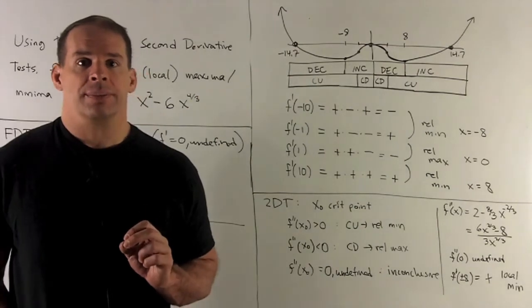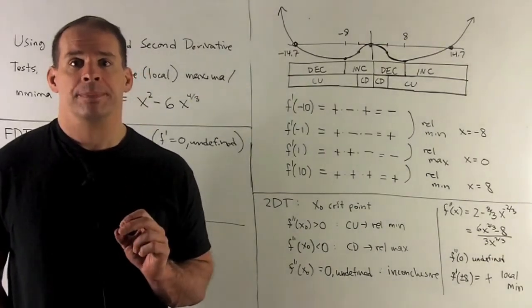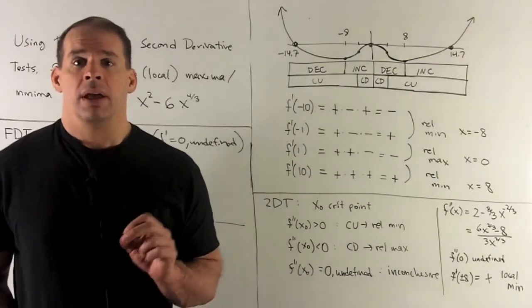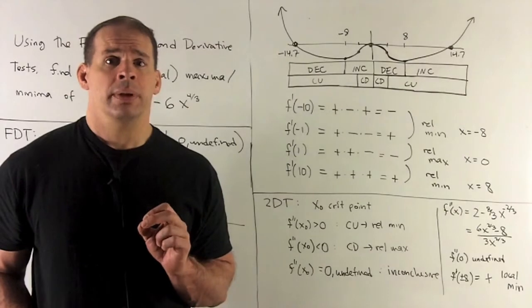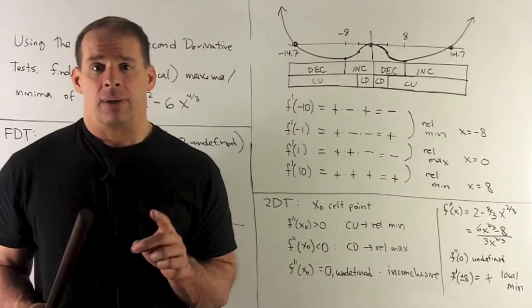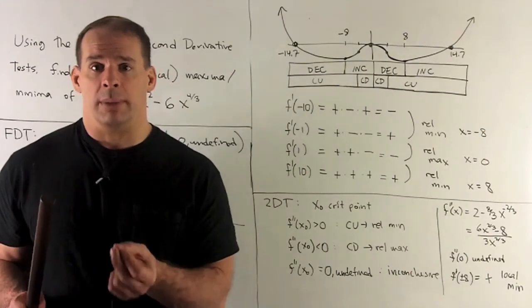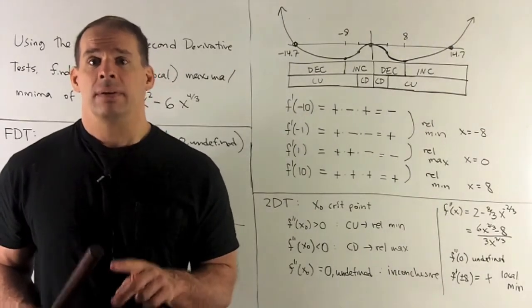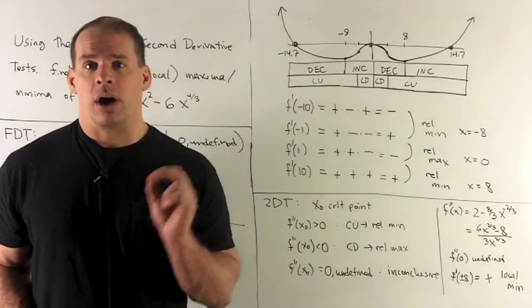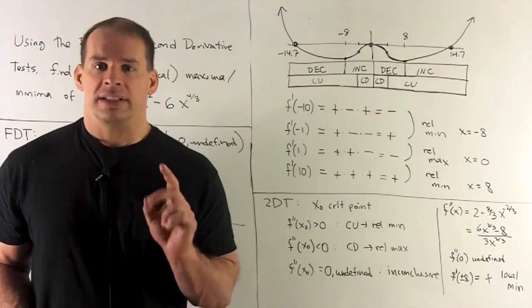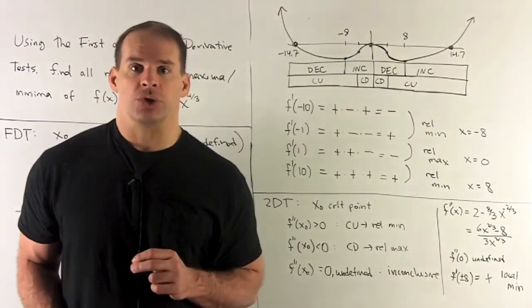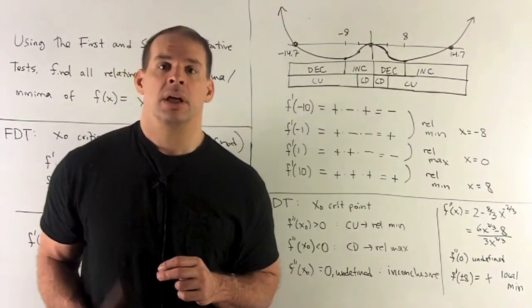Second derivative test. We take the derivative of our first derivative. x₀ is going to be a critical point. I apply our second derivative to x₀. If the number that comes out is positive, we're going to be concave up. So that's going to be a local minimum. If it's negative, we'll concave down. It's going to be a local maximum. And then if I get zero or undefined, the test just says you can't say anything. You need to do more work, probably using the first derivative test.